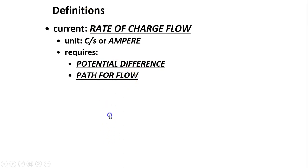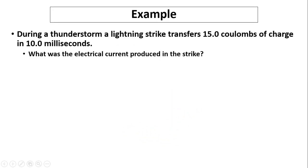I equals delta Q over T. In this case, delta Q is the amount of charge flowed through one point during a certain amount of time. Let's take a look at this example: During a thunderstorm, a lightning strike transfers 15 coulombs of charge in 10 million seconds. What was the electrical current produced in this strike?